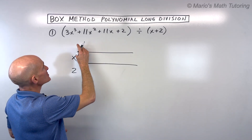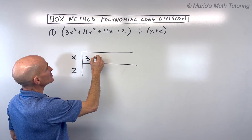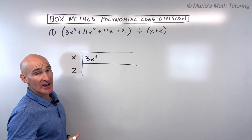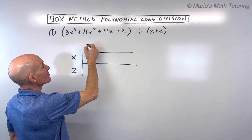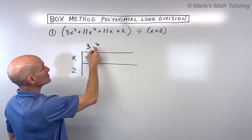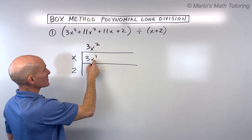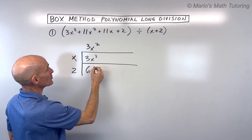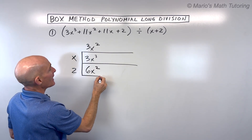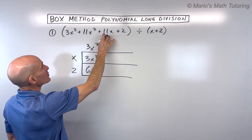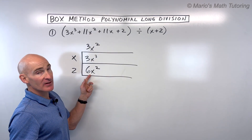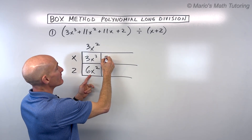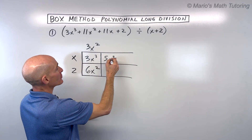What we're trying to do is get the quantity inside the box to equal 3x cubed plus 11x squared plus 11x plus 2. So we start off with the first term, 3x cubed, and we say: what times x equals 3x cubed? That's 3x squared. Then we distribute: 3x squared times x is 3x cubed — that matches. 3x squared times 2 gives us 6x squared. Now we look at our polynomial and we have 11x squared, but here we have 6x squared, which means we need an additional 5x squared.